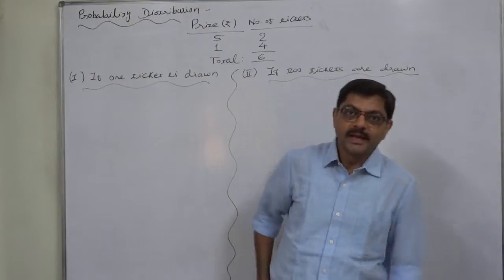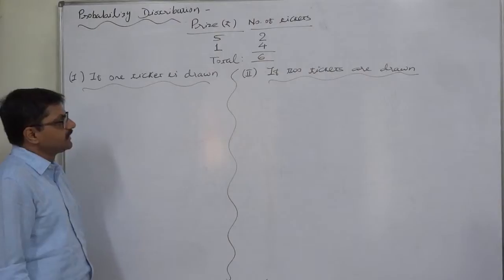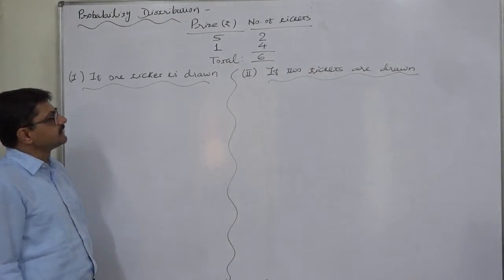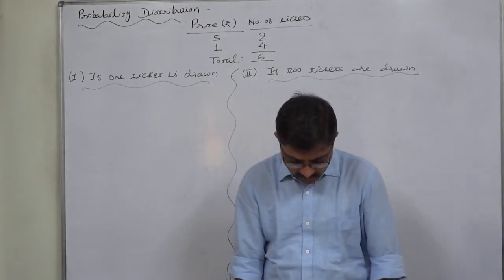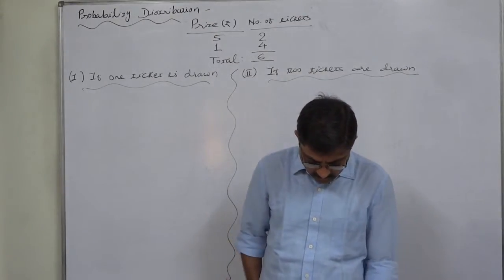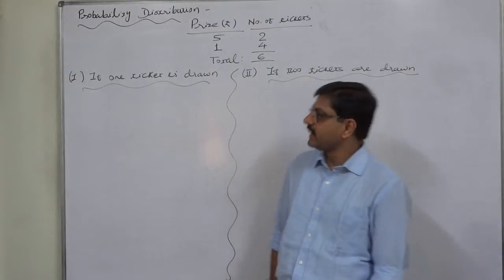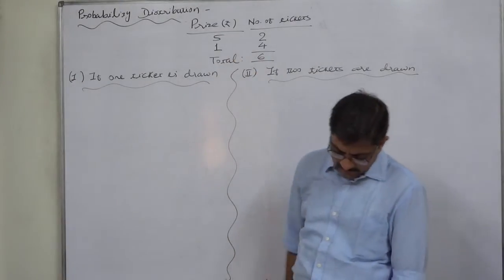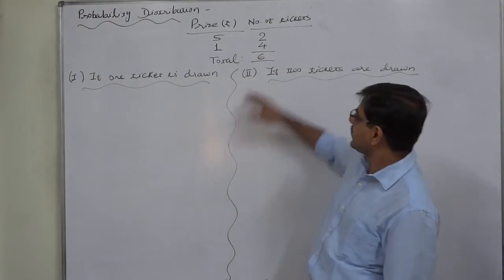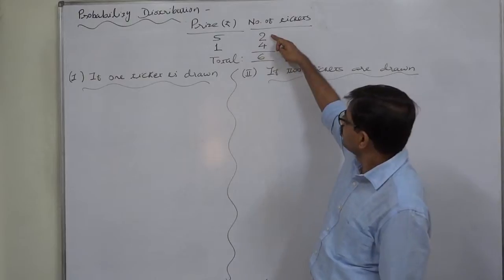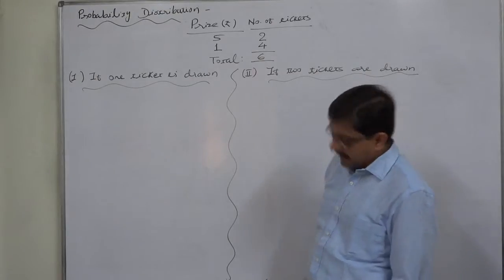Hello and welcome. A new case in probability distribution — this time a case with some tickets having prize money on them. A box contains six tickets: two of the tickets carry a prize of rupees five each, and the other four carry a prize of rupee one each. So there are six total tickets in all.